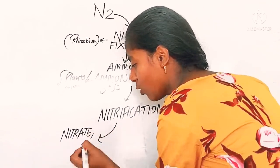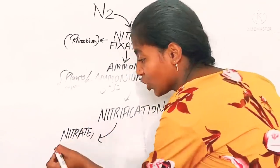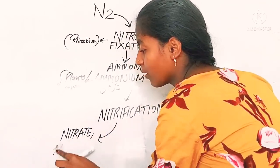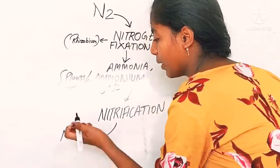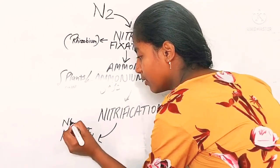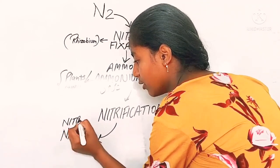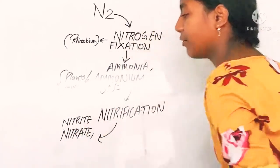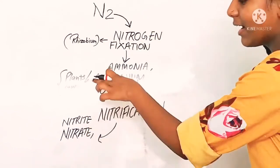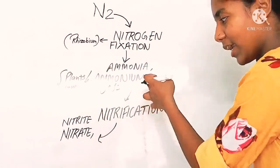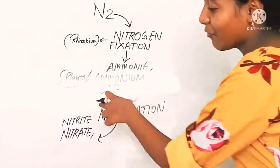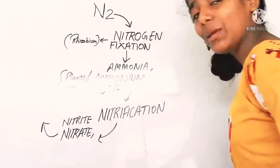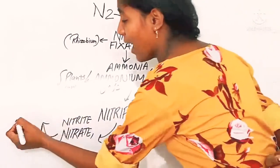After ammonia and ammonium ions are formed, nitrification takes place. Through nitrification, we get nitrate and nitrite. These nitrates and nitrites then move on to plants.